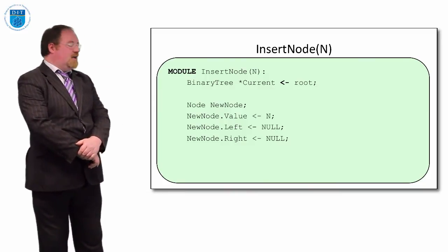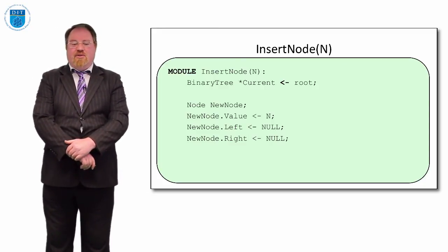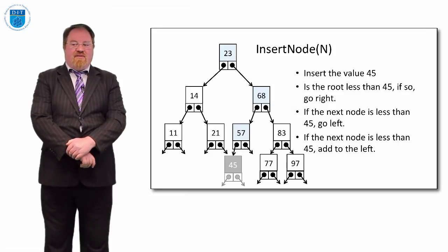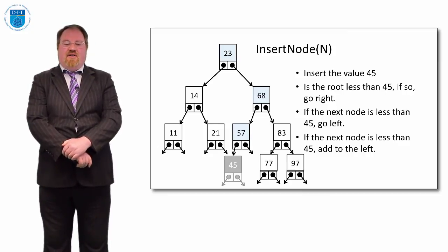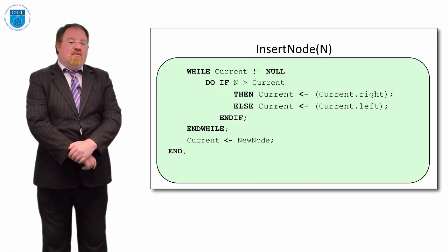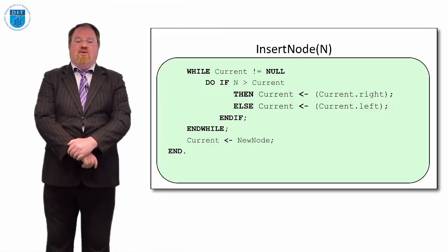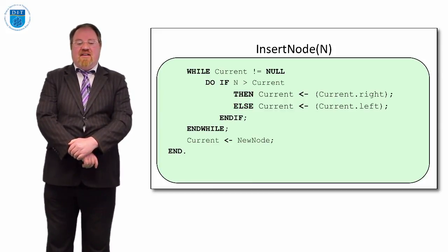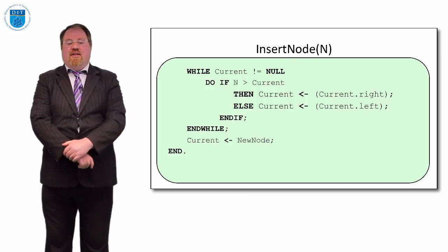For the iterative insert code: set current to the root, then create a new node with left and right pointers set to null and value set to 45. Then loop: as long as current is not null, if n is bigger than current go right, else go left, until we find a null position. Once a null value is found, we hang the new node off that position.